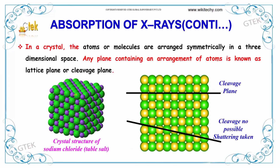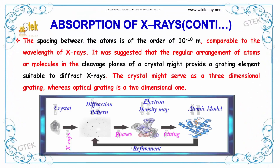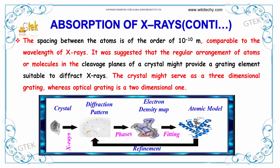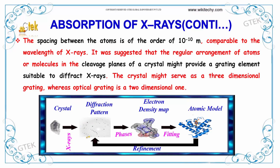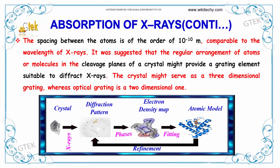In a crystal, the atoms or molecules are arranged symmetrically in three-dimensional space. Any plane containing an arrangement of atoms is known as a lattice plane or cleavage plane. This is the crystal structure of sodium chloride — table salt. You can see the cleavage plane, where no shattering occurs. The spacing between the atoms is of the order of 10 to the power of minus 10 meters, comparable to the wavelength of X-rays. It was suggested that the regular arrangement of atoms in the cleavage plane of a crystal might provide a grating element suitable to diffract X-rays, making the crystal a three-dimensional grating, whereas an optical grating is a two-dimensional one.